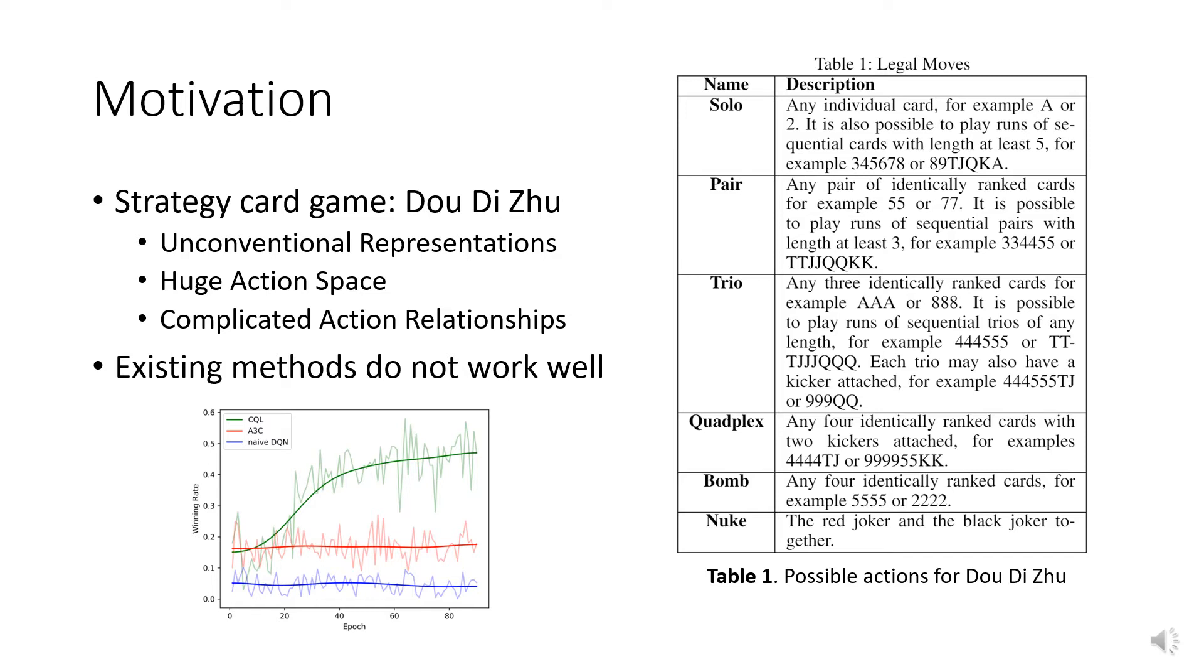DoDizu is a strategy card game where each agent is about to give a subset of handheld cards that is valid during its turn. There are over 13,000 valid actions which is pretty huge. Besides, each action is a combination of individual cards making it hard to represent, and complicated action relationships are another challenge in DoDizu.